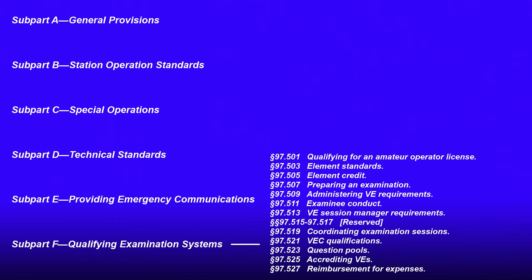Subpart F: Qualifying Examination Systems. This section starts out with qualifying for an amateur radio license, element standards, element credit, preparing an exam, administering VE requirements, examining conduct, VE session management requirements, coordinating examination sessions, VEC qualifications, question pools, accrediting VEs, and reimbursement of expenses.